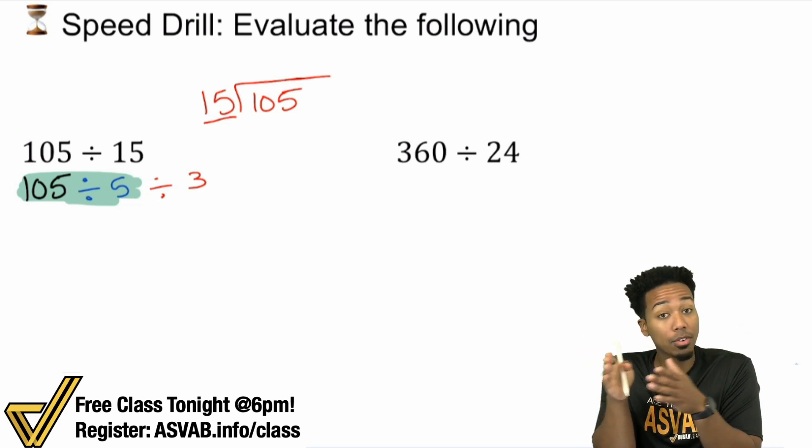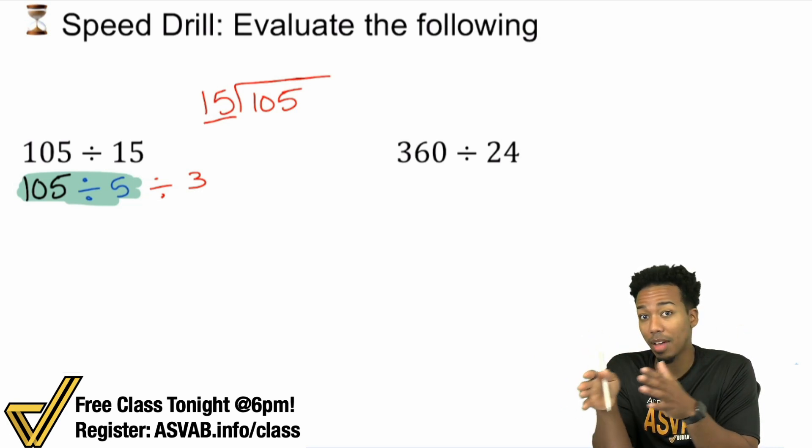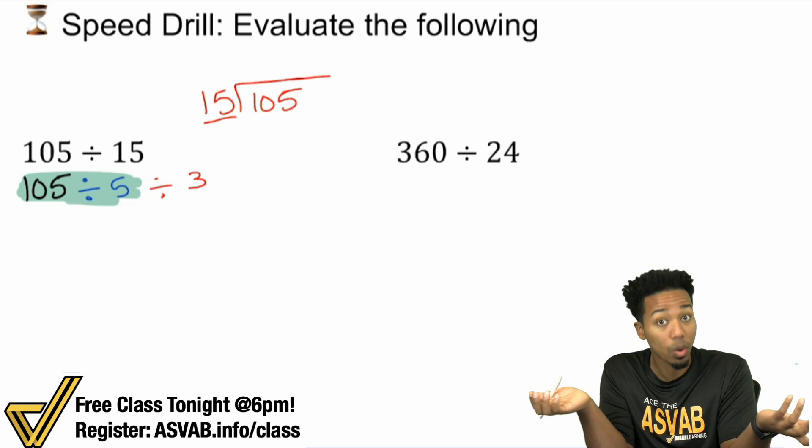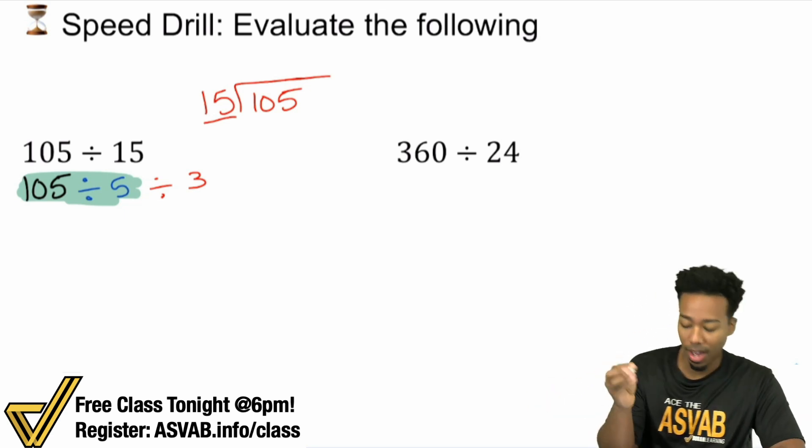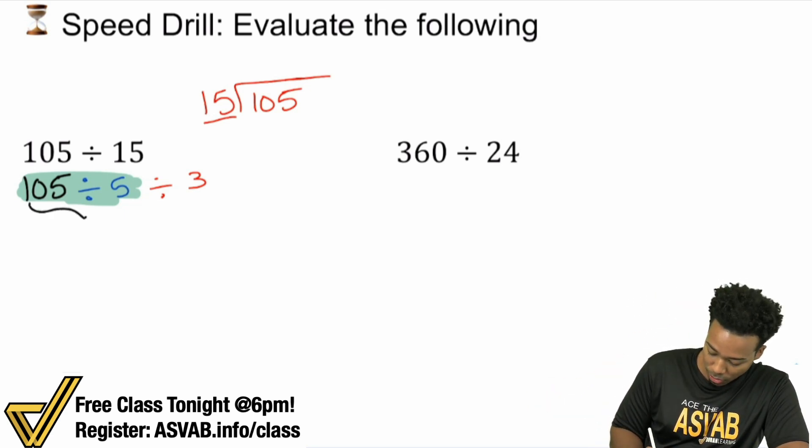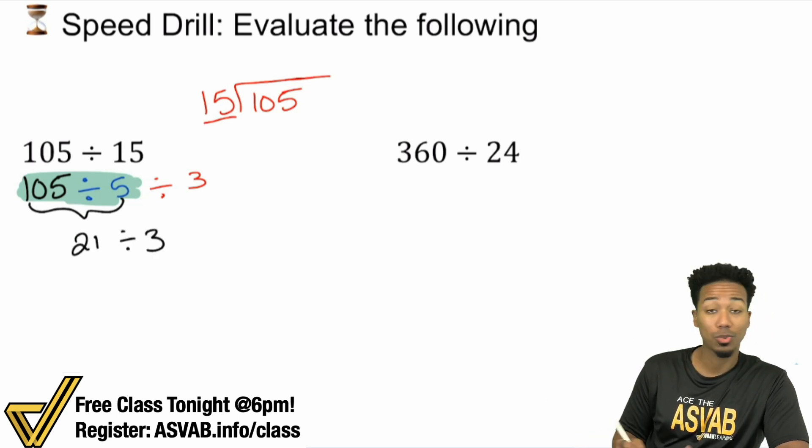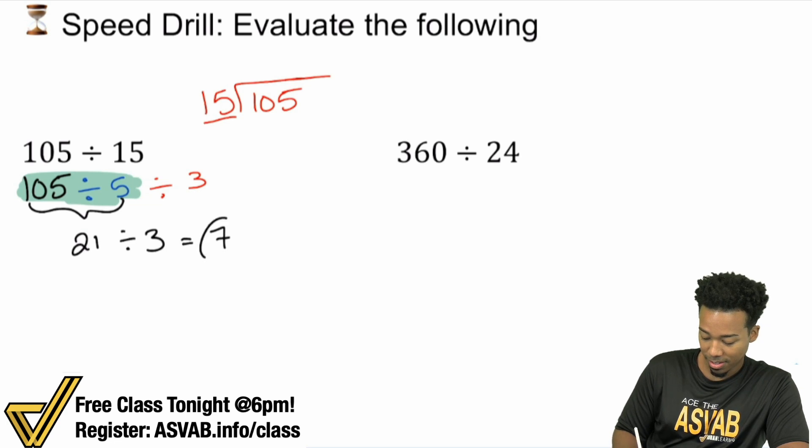Again, one more time. Five goes into 100 20 times. So five goes into 105 21 times. Just one extra five, one group of five. So with that, this turns into 21 divided by three in your head. 21 divided by three is seven. Booyah.